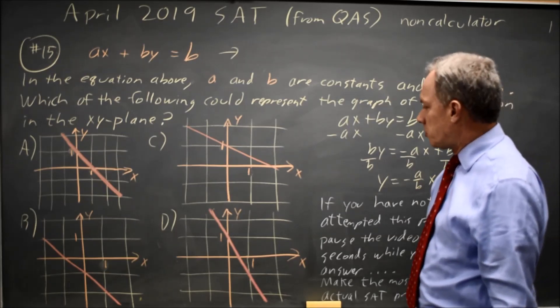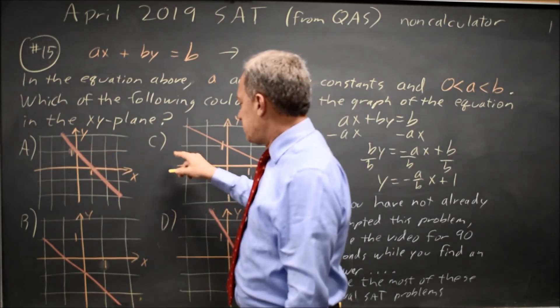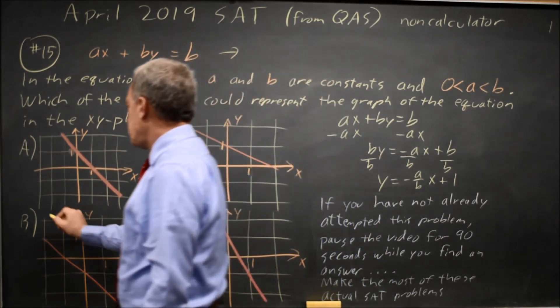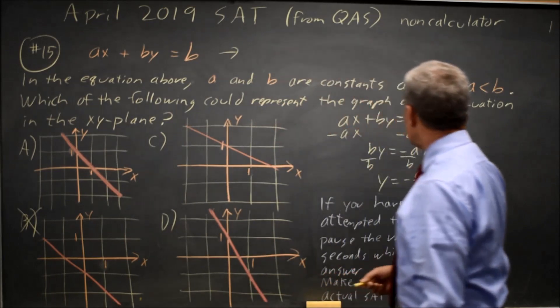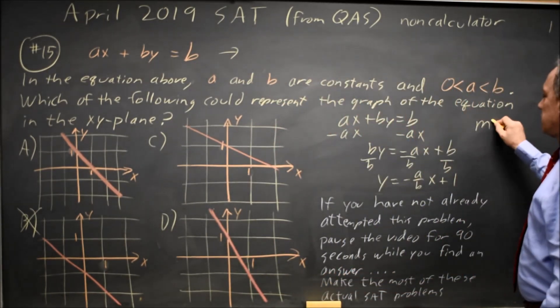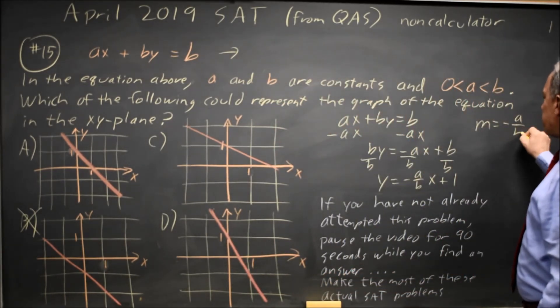So the y-intercept is 1, which works for a, c, and d, but not choice b, so b is wrong. The slope is negative a over b,